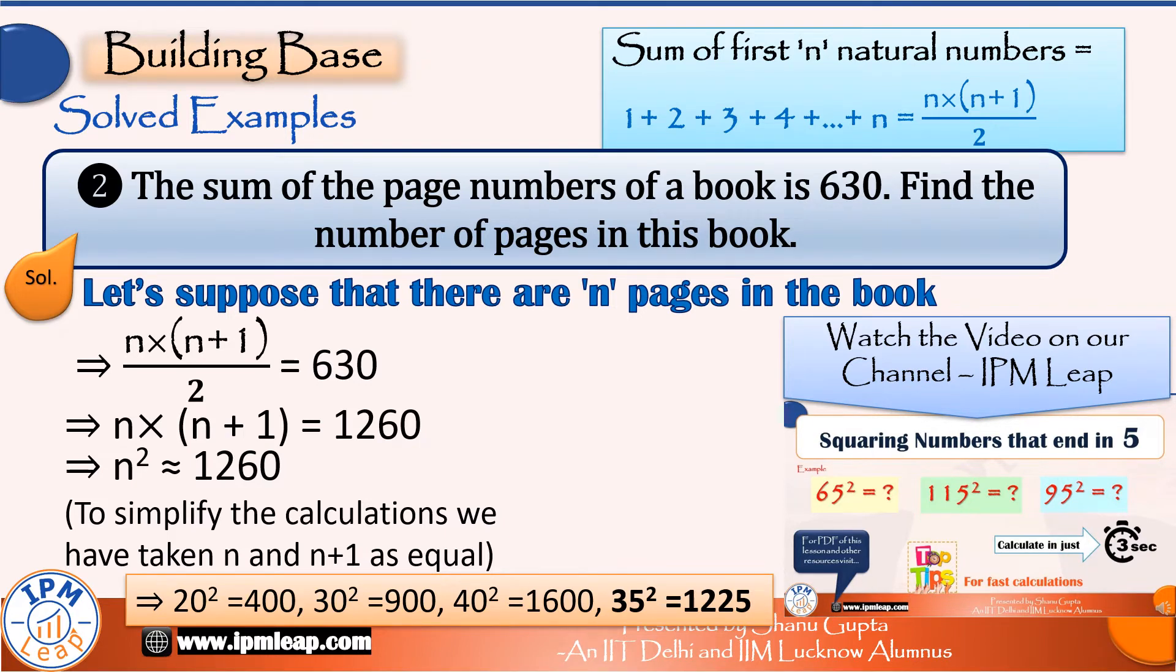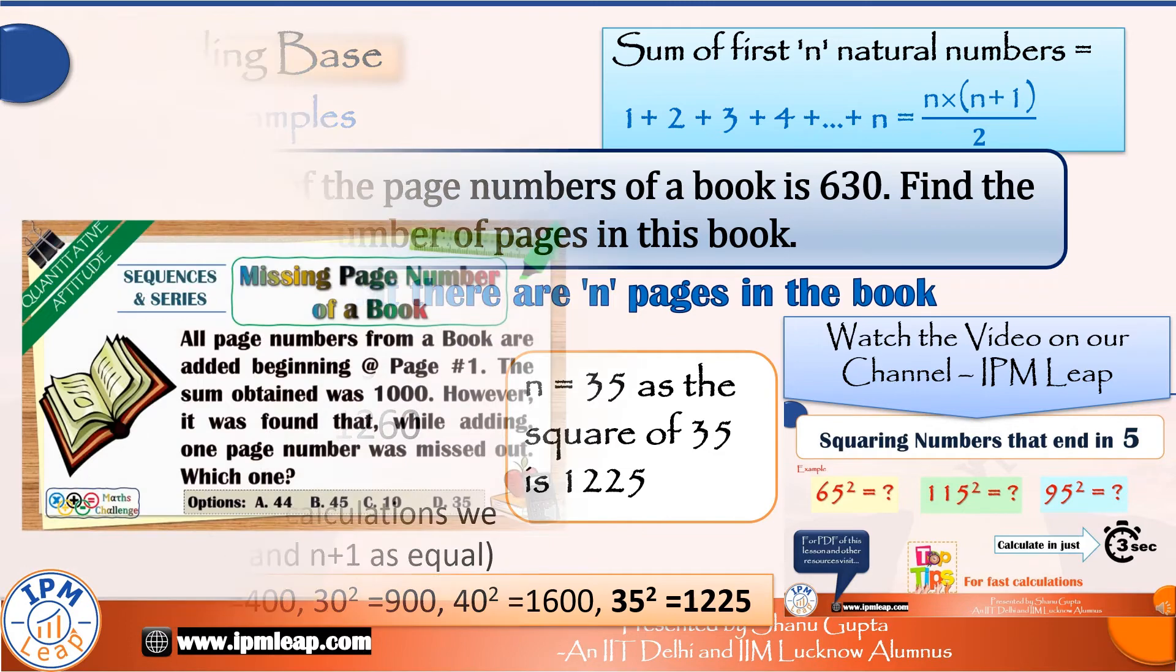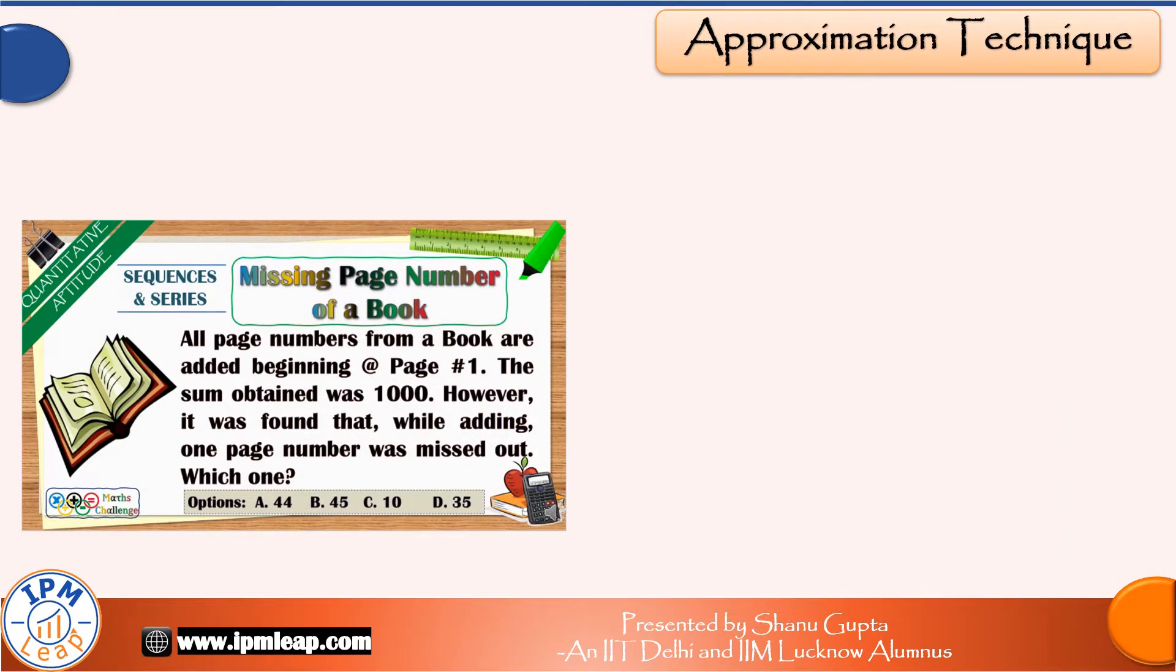n = 35, as the square of 35 is 1225, and because we have reduced n+1 to n, our n² should be slightly less than 1260. And now comes our main question: all page numbers from a book are added beginning at page number 1. The sum obtained was 1000. However, it was found that while adding, one page number was missed out. Which one?